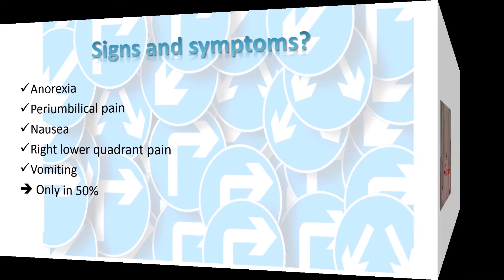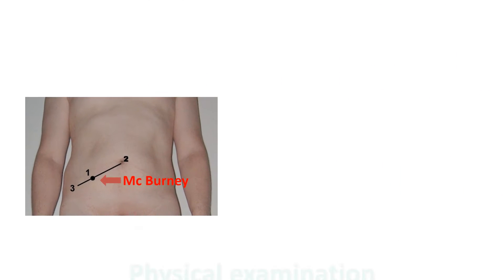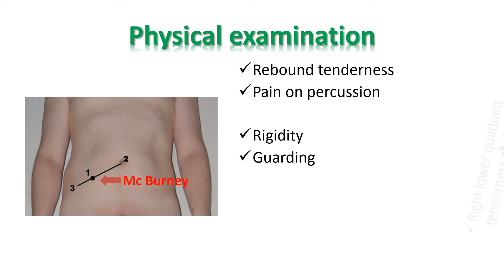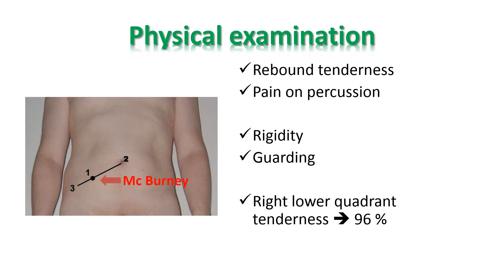So, when you suspect appendicitis, which physical findings will you look for? First, rebound tenderness, pain on percussion, rigidity, and guarding. Guarding means that the abdominal wall muscles will tense up to guard inflamed organs within the abdomen from the pain of pressure upon them. In 96% of patients you will find right lower quadrant tenderness — palpate the McBurney point.